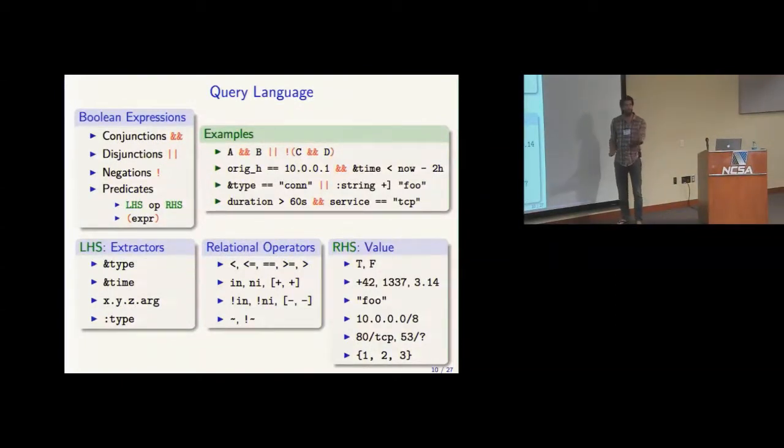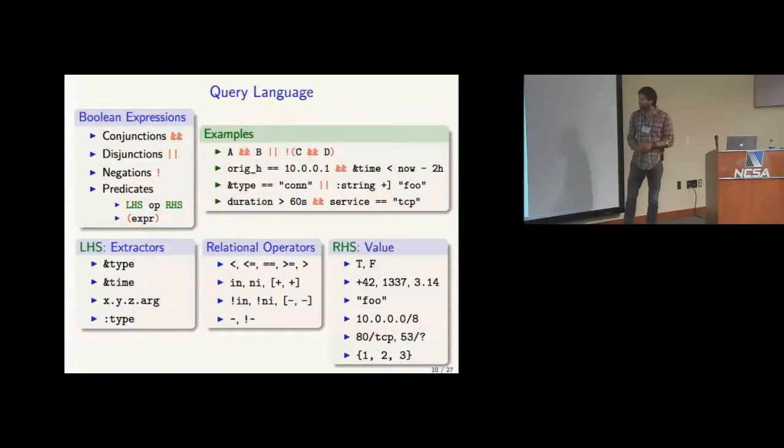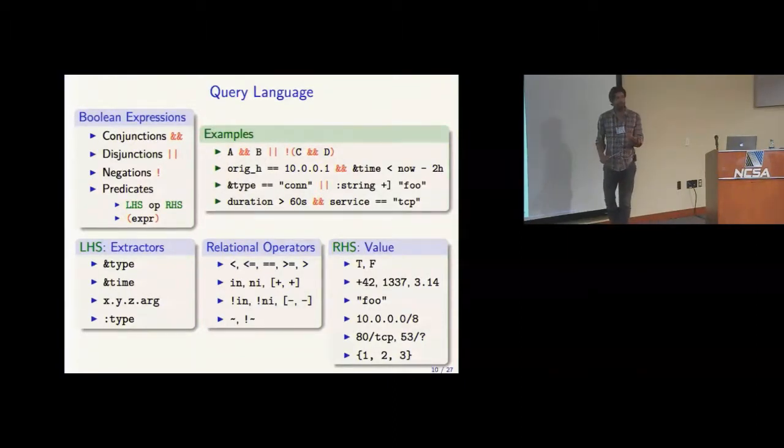There are some examples here where you say time less than now minus two hours. So everything that was happening before two hours. And this is a point query where you ask for a specific IP address. This would be an example of metadata querying of the event name. And there's also operators for containment in. An IP address is in a subnet, for example. That's this operation that's specific to IP addresses.